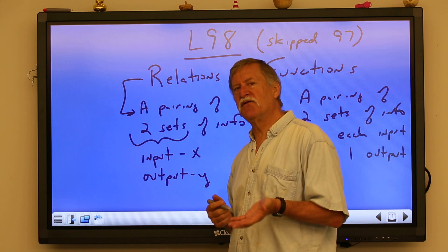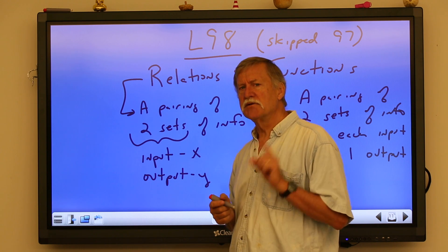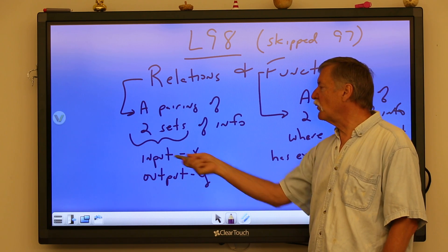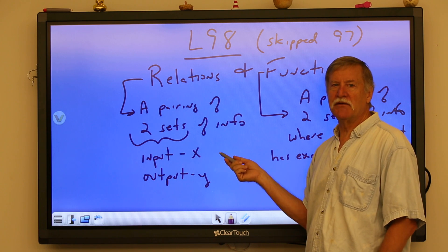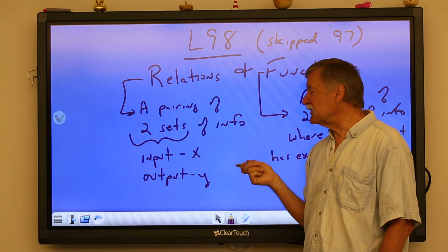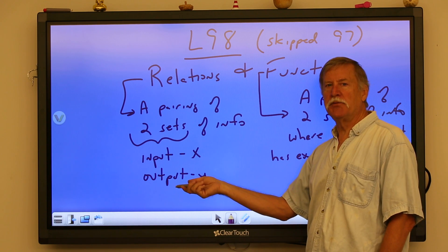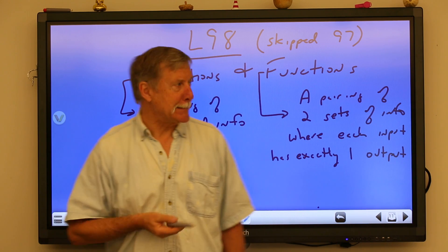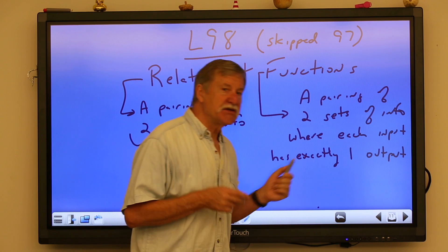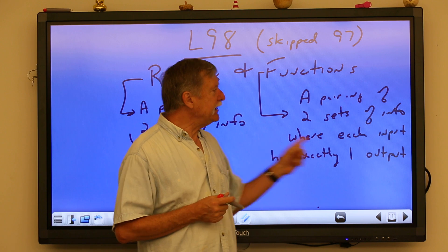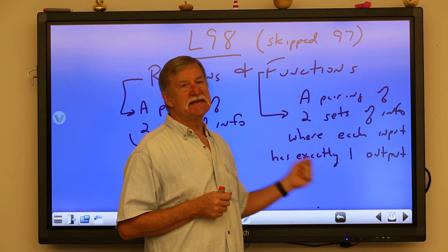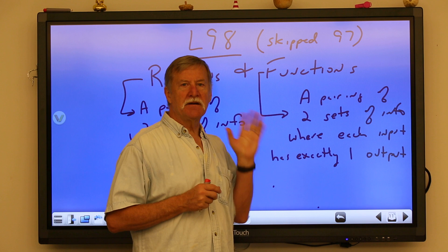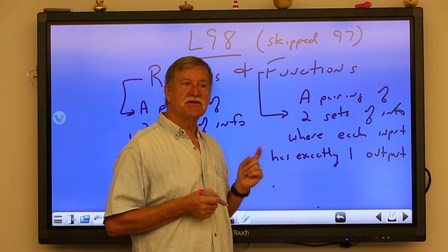Functions are a special branch of mathematics we'll be heading into, and determining whether something's a function or not is going to become pretty important, so pay attention. While a relation is just any pairing of two sets of information — one set called the input (the x value, graphed on the horizontal axis) and the other called the output (y, on the vertical axis) — it becomes a function when each input has exactly one and only one output.